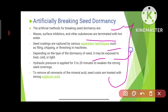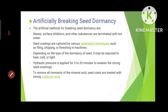Depending on the type of dormancy, the seed may be exposed to heat, cold, or light. After identifying why the seed is not germinating, we can expose it to the appropriate temperature — high temperature if needed, or low temperature if required. Hydrostatic pressure is applied for 5 to 20 minutes to weaken strong seed coverings, removing remnants of mineral acid. Seed coats can also be treated with strong sulfuric acid, which breaks down the seed coat and leads to germination.